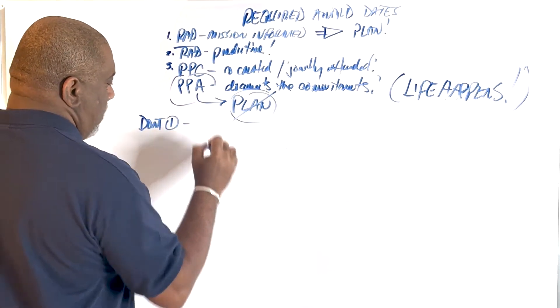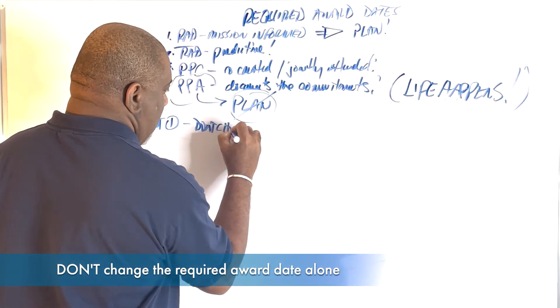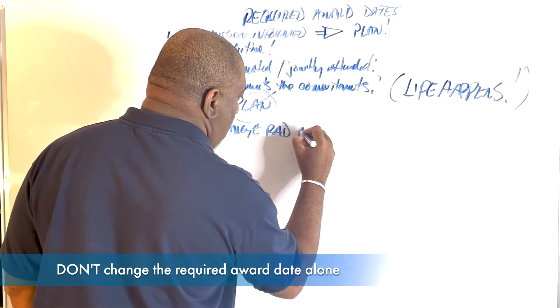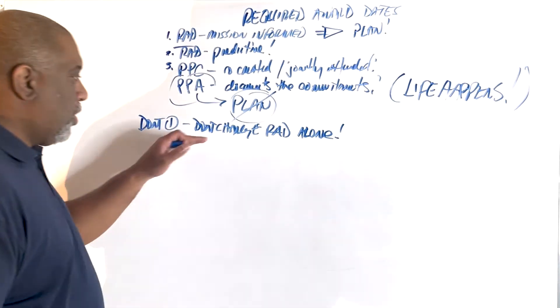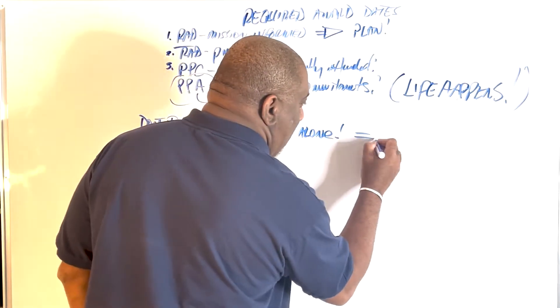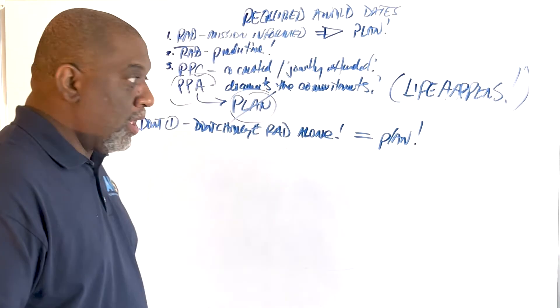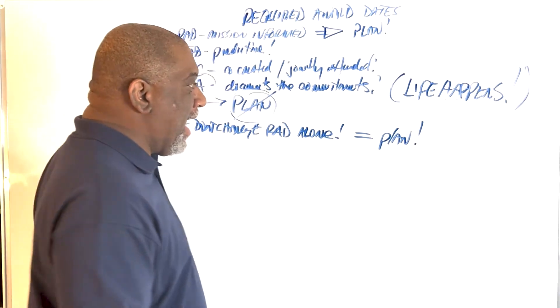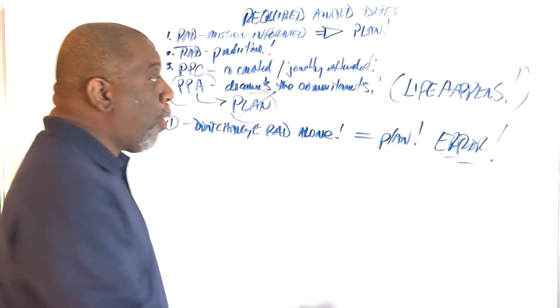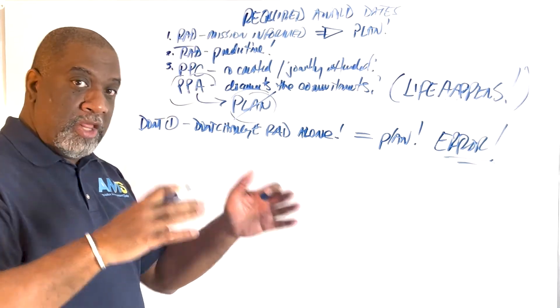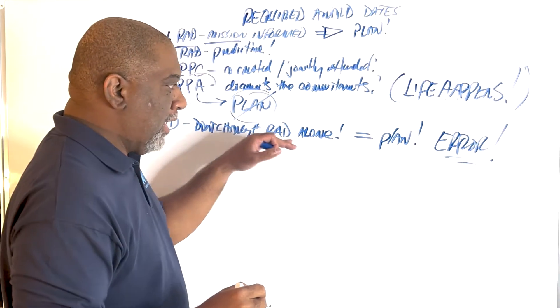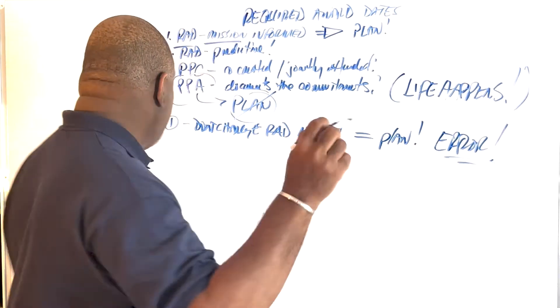Don't number one, don't change the required award date alone. Don't change that required award date without changing the plan, you get error. So it's like, something's wrong. And you wonder why your plan is still in the red or being highlighted. It's because the required award date, which is mission driven, is now not reflective of the plan.